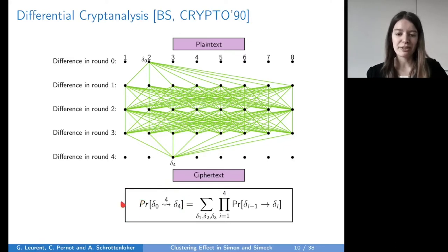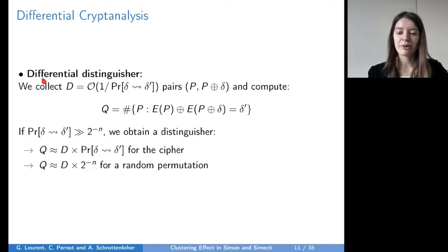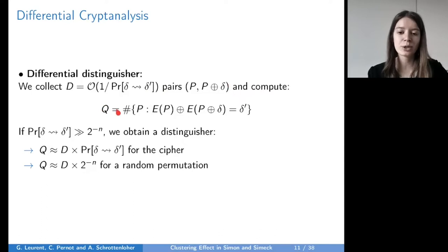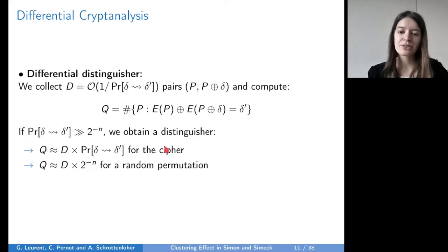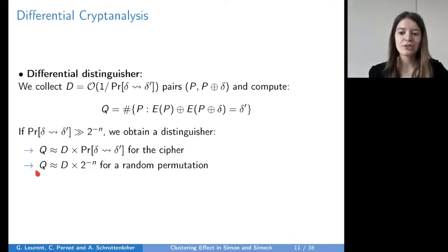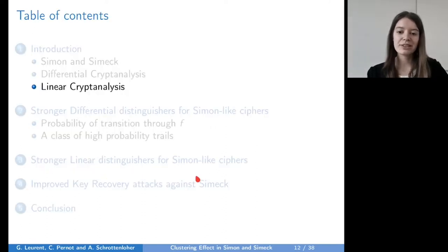We also define a differential distinguisher. If we collect d pairs of plaintexts with input difference Δ and compute a statistic Q equal to the number of pairs that have an output difference of Δ', then we can distinguish our cipher from a random permutation if the probability of our differential is bigger than 2^{-n}. For the cipher, Q is expected to be approximately d times the probability of our differential, while for a random permutation, Q is expected to be approximately d times 2^{-n}.